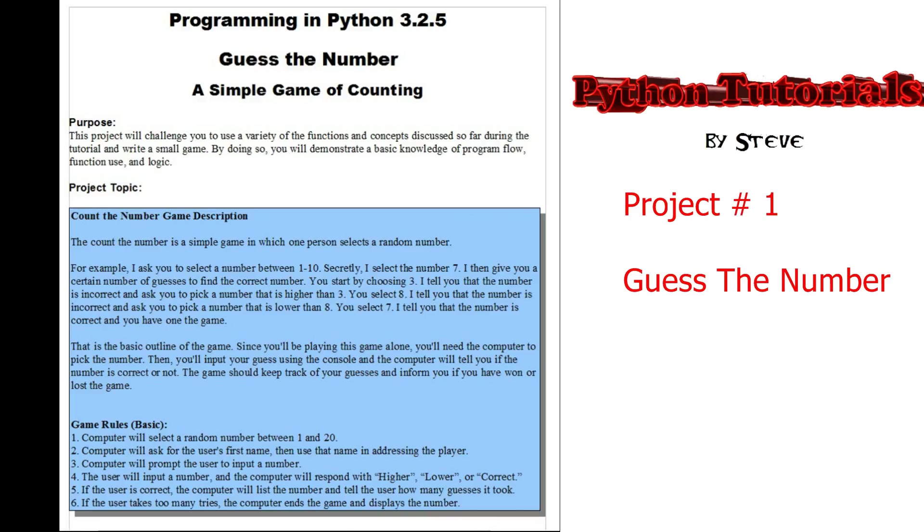I think everybody has probably played a count the number game. Usually there's two people and you play higher or lower. The first person selects a random number. So let's say I were to secretly select the number 7. Then I would say pick a number between 1 and 10. You'd take a guess and you may guess the number 3. I would tell you that that number is too low and have you guess again. You might select 8 after that. I'd say now that number is incorrect. Go ahead and pick a number that is lower. 8 is too high. You select 7 and then I tell you congratulations. You've won. And that's really all the program is.